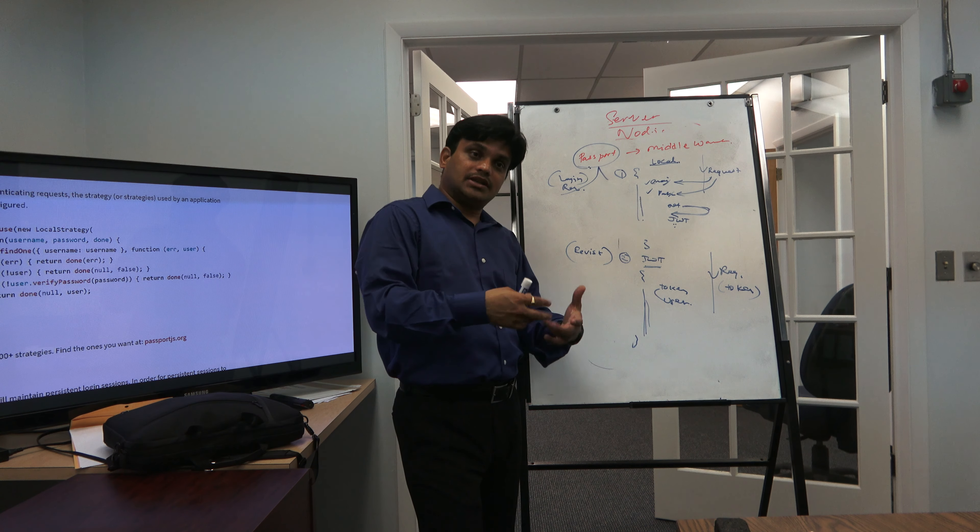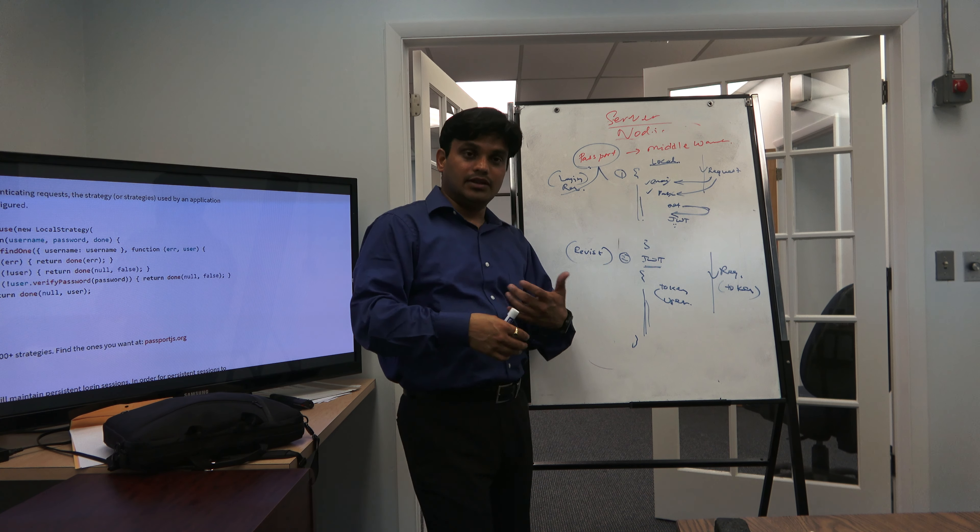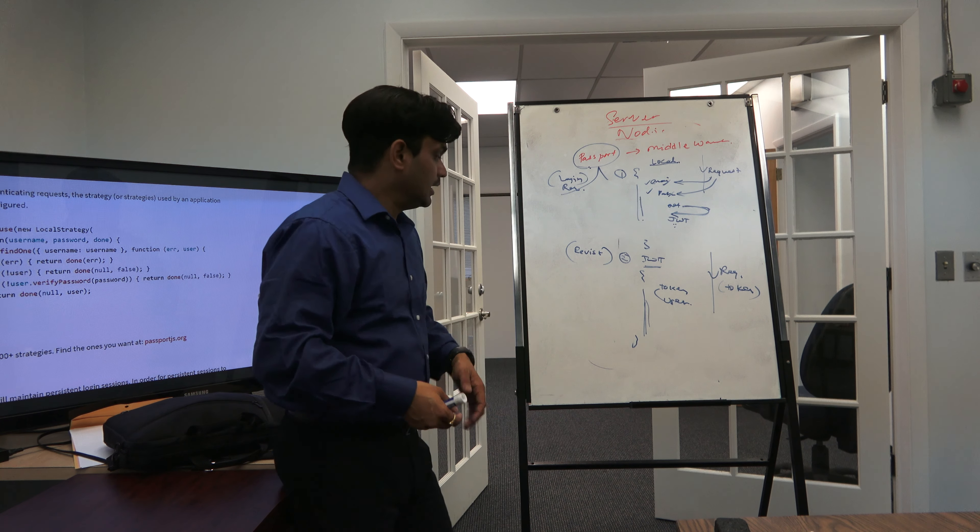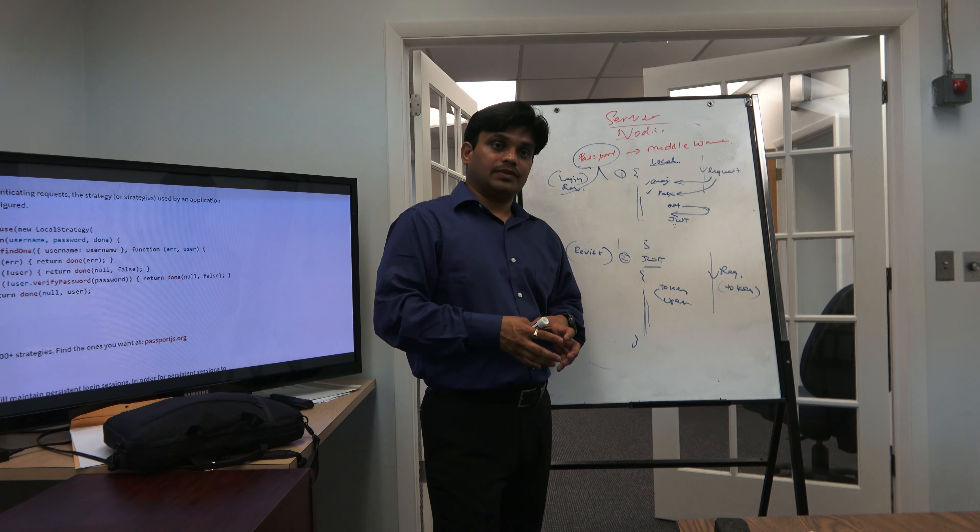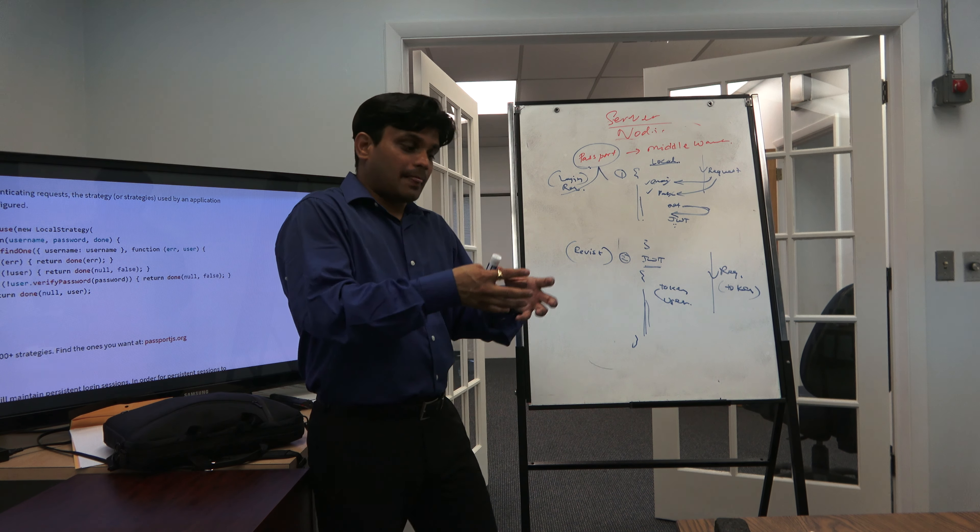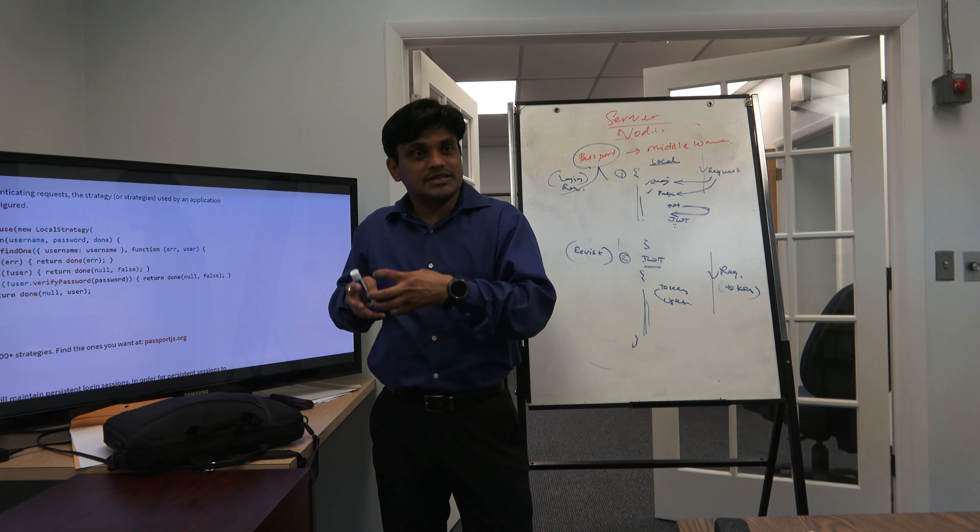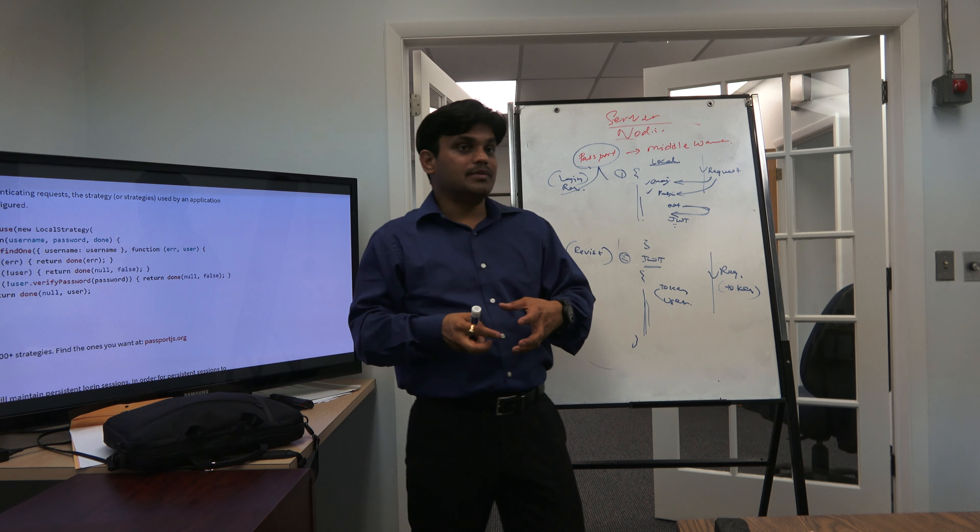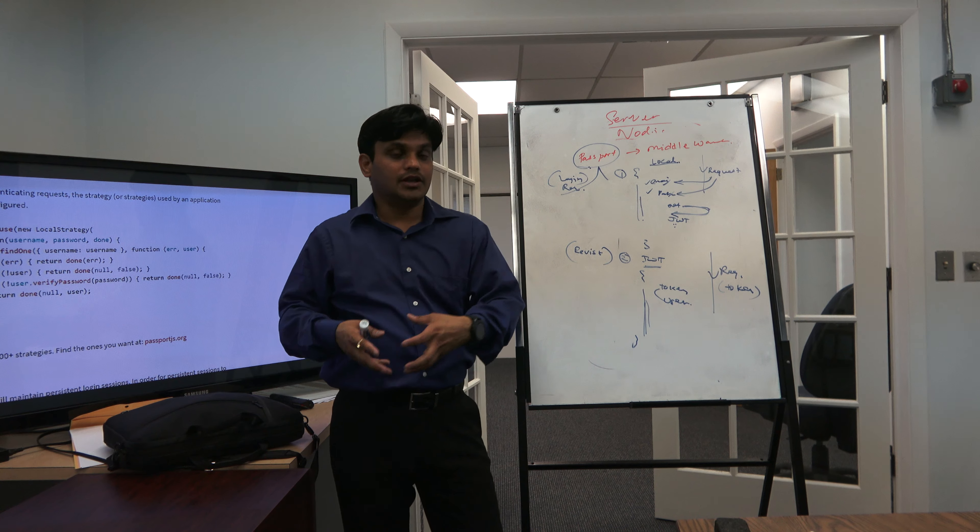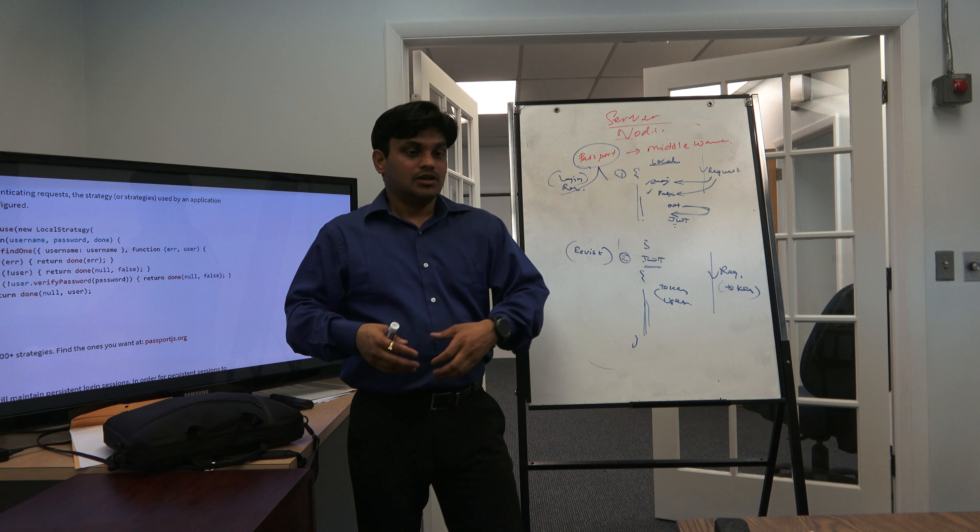Then all of the strategy that we discussed - we will ask the JSON web token to decode it and get the user object out of it. Once you get the user object, put that user object into the request object.